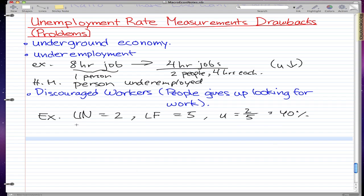But let's say one person left. The unemployed is now one, and the labor force is now four. The unemployment rate is one over four, 25%.